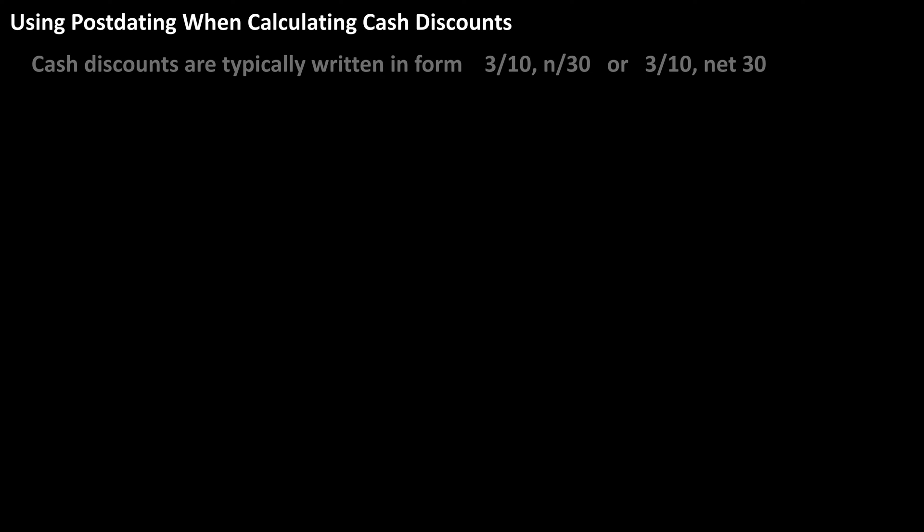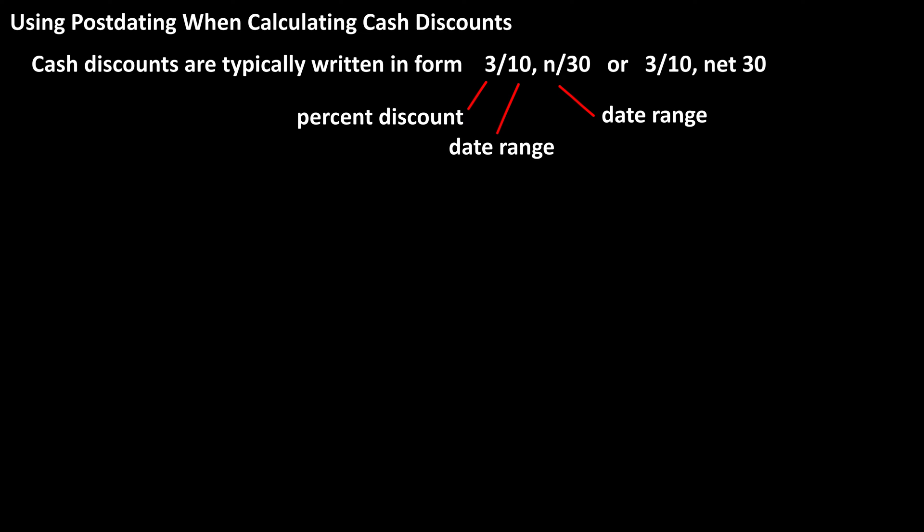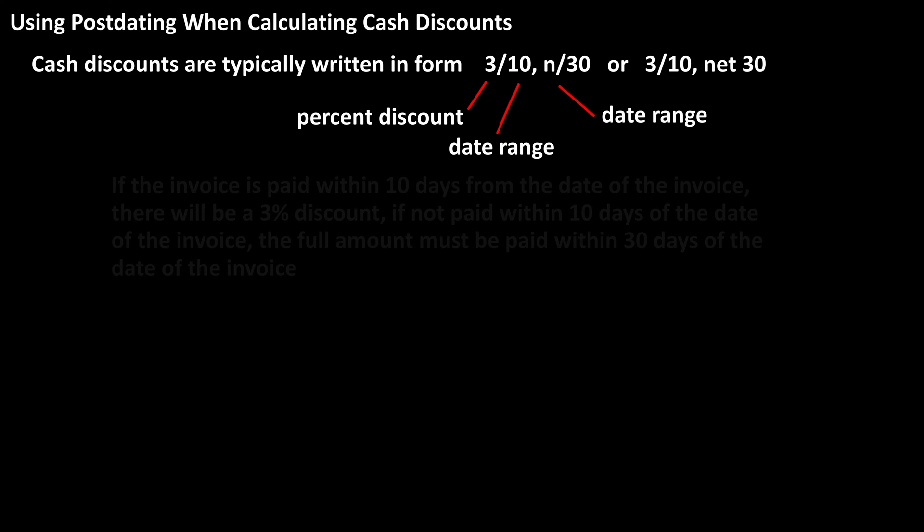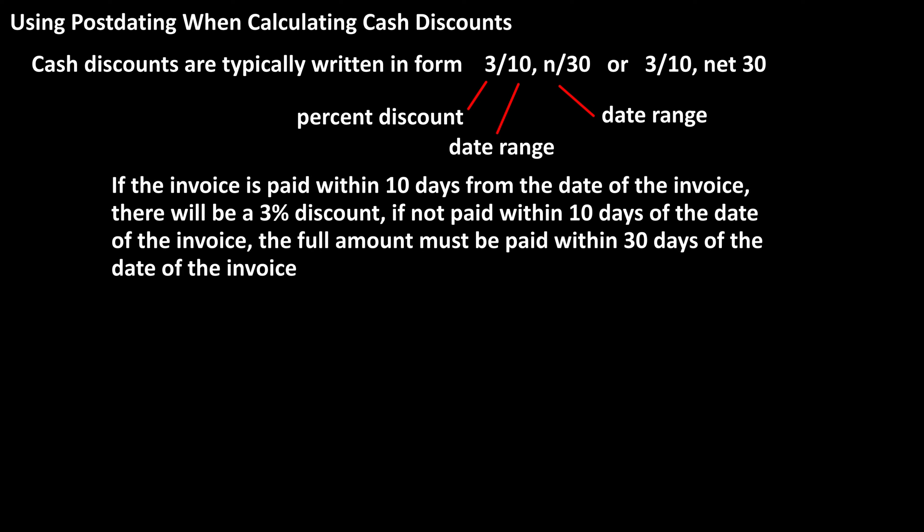Cash discounts are often written as 3/10 net 30 on an invoice. The first number is a percent discount. The second number is a date range for the cash discount, so in this case 10 days. And net 30 is the date range for the regular due date, so in this case 30 days.